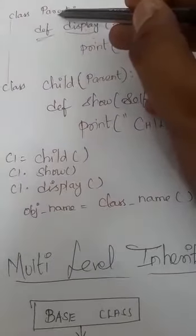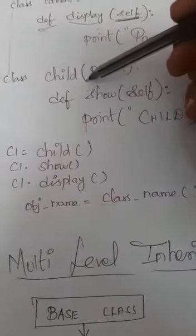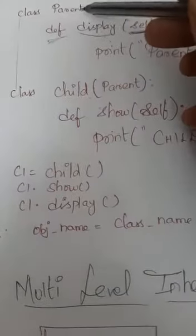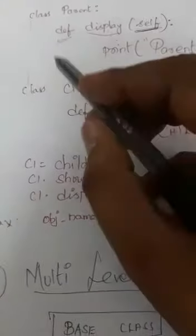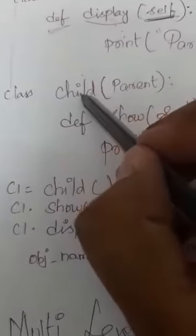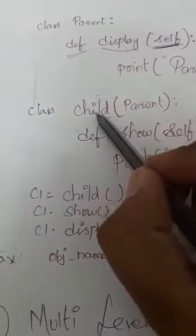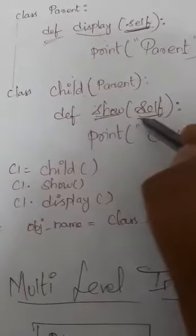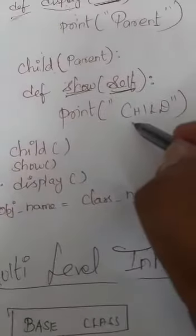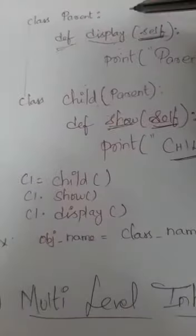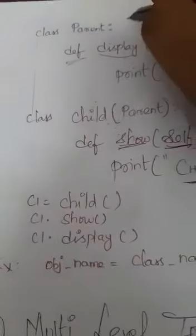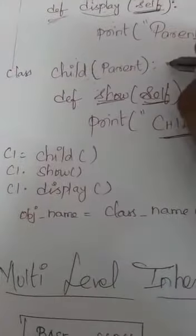Next I have created a base class. Now I want a derived class. I want to derive this class from my base class — the parent class. I am writing another class called 'child'. Inside that, I am defining another function called 'show', passing the default parameter self, and just printing a message called 'child'. Now I have created two classes: base class is parent and derived class is child.